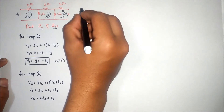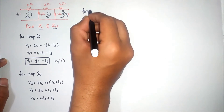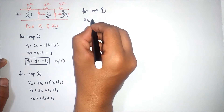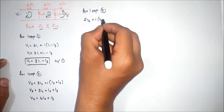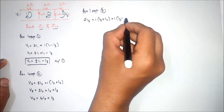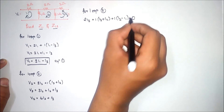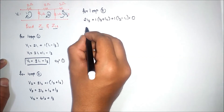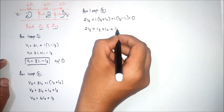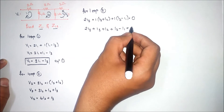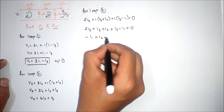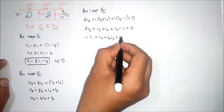For loop 3, the equation will be: 2i3 plus 1(i3 plus i2) plus 1(i3 minus i1) equals 0, which gives 2i3 plus i3 plus i2 plus i3 minus i1 equals 0. Simplifying, we get minus i1 plus i2 plus 4i3 equals 0.